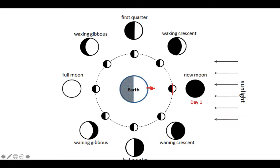Our Sun is way over here somewhere — we can't see the Sun — but the sunlight is coming in from the right side on this diagram. They could draw this with the Sun coming in from the left; it doesn't really matter. But as long as you know where the Sun is, you know that the half of the Earth that faces the Sun will be the daytime side, and the half of the Earth facing away from the Sun is the nighttime side. So this man is standing at noon and as he looks up into the sky, he sees the moon.